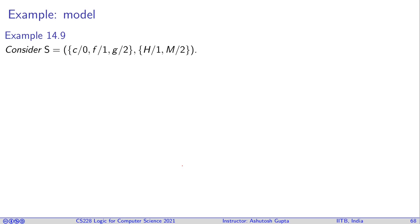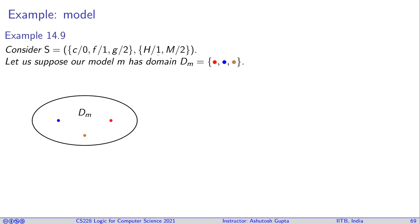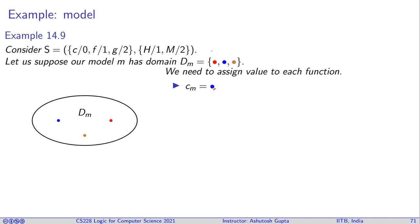Let's look at an example. Suppose you have a signature with symbols c, f, g, h, and m. We choose a domain with three values: red, blue, and brown. Now we give meaning to each symbol. For c, we choose one domain value — say c is blue. For function f, every input must produce one output: blue maps to brown, brown maps to red, red maps to red.